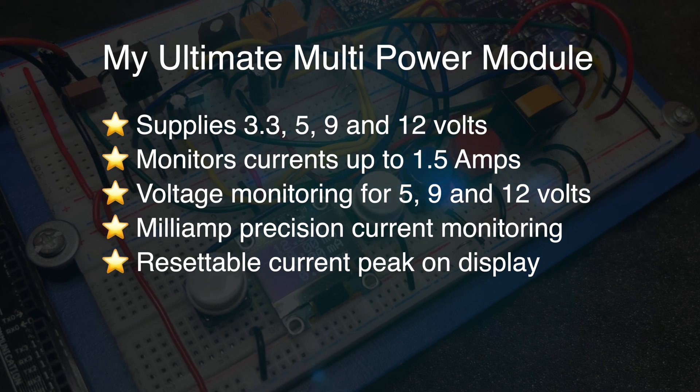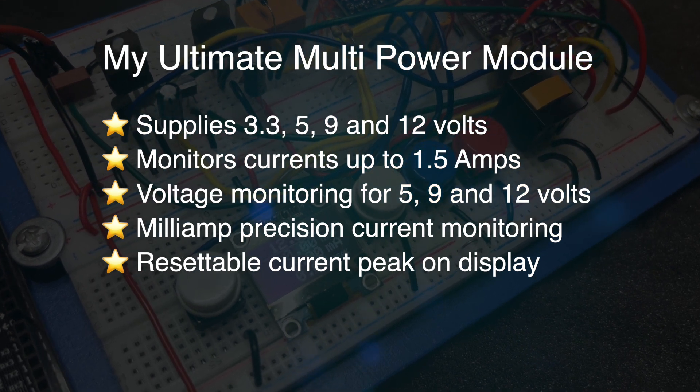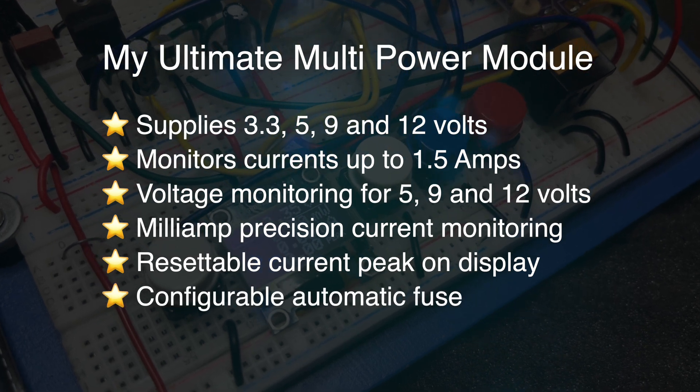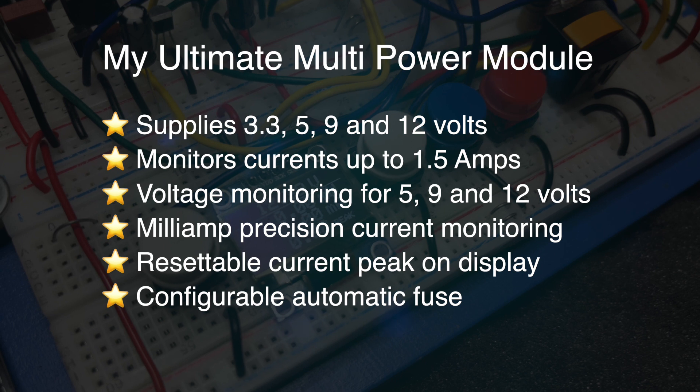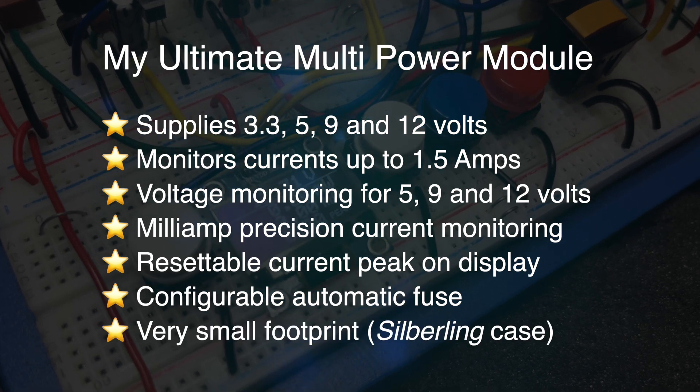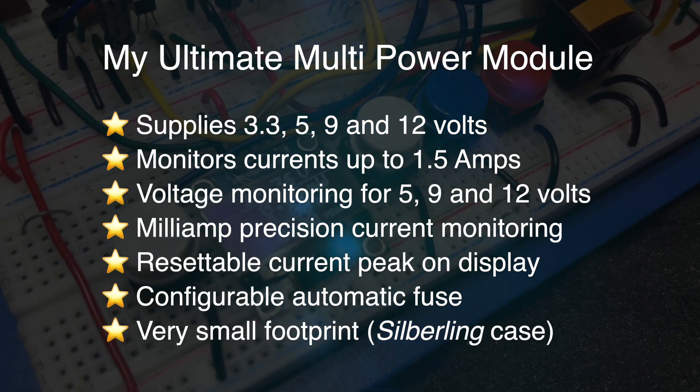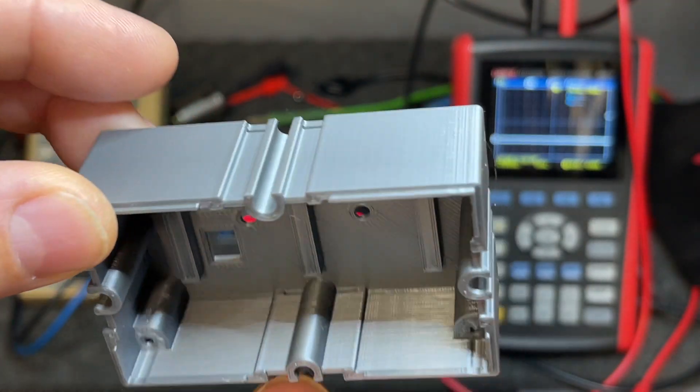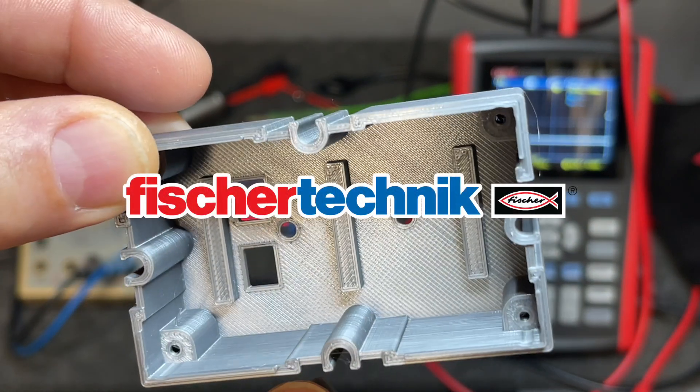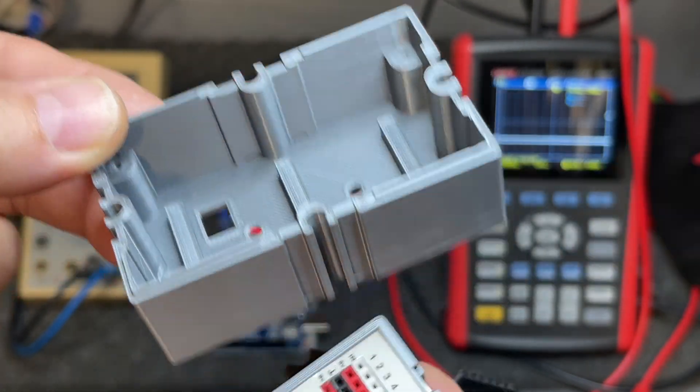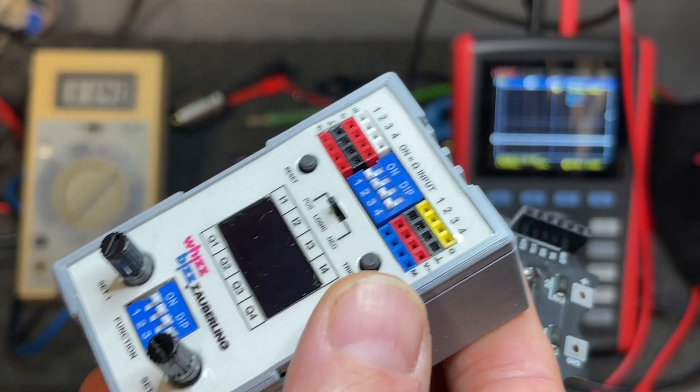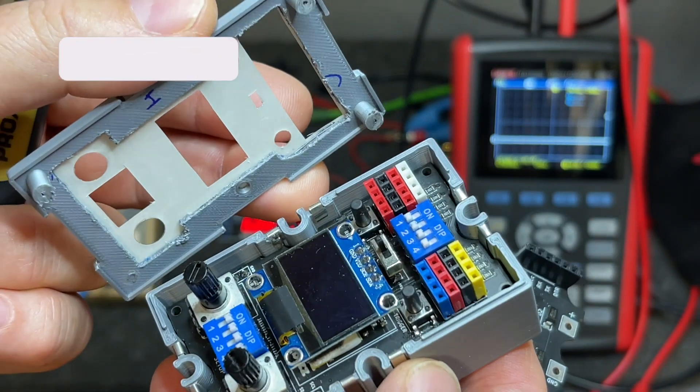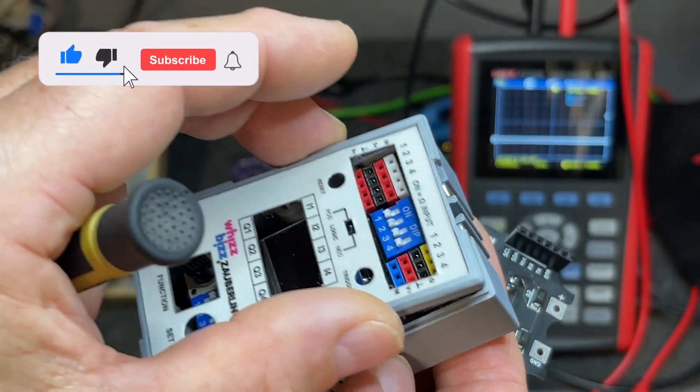And we want milliamp precision in our current monitoring. So the three buses must be monitored. And it must have a resettable current peak on the display. And then, our extra wish, we want an automatic fuse, so we can configure the maximum current for each bus. And last but not least, a very small footprint. It has to fit in a case like this. This is a 3D printed Fischer Technik Silberling case, and it's only three and a half by seven centimeters big. By the way, this is my Zauberling. For more details about my other experiments here, take a look at my other videos and do subscribe.